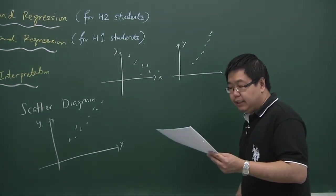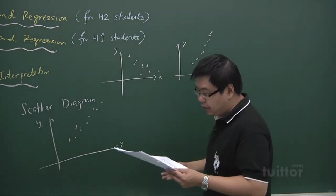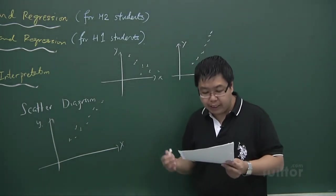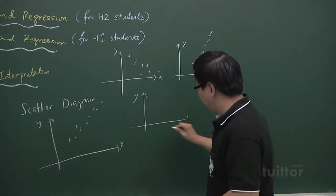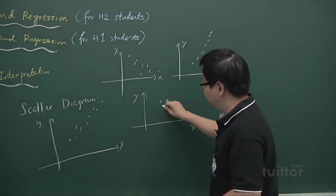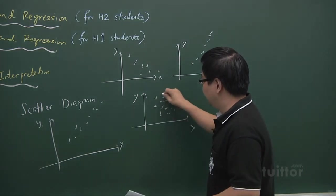Secondly, it gives you the form of the relationship, whether it is a linear relationship, quadratic relationship, or curve, or there is no clear relationship. An example of a situation where there is no clear relationship could be something in this manner, all scattered everywhere.